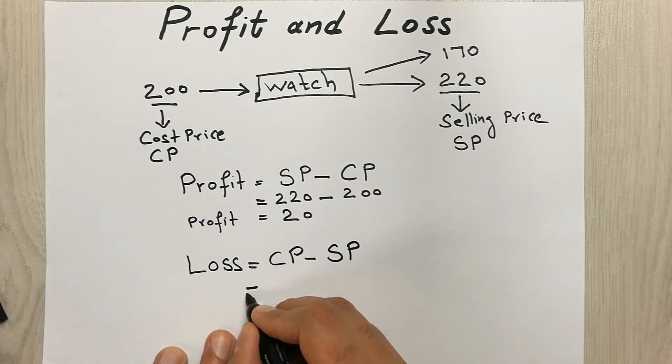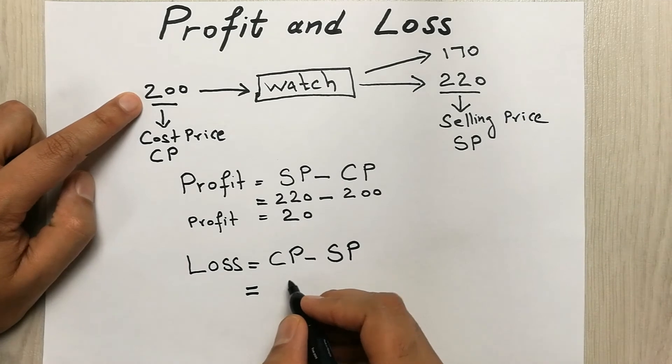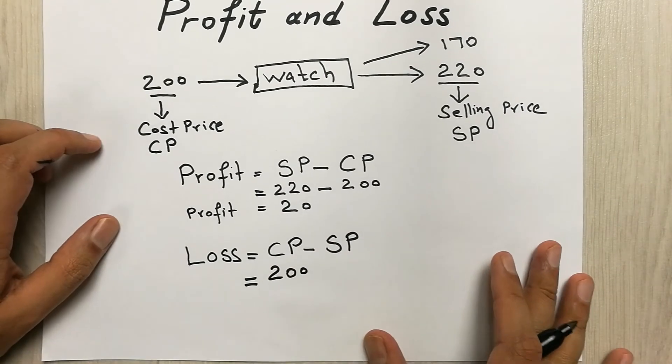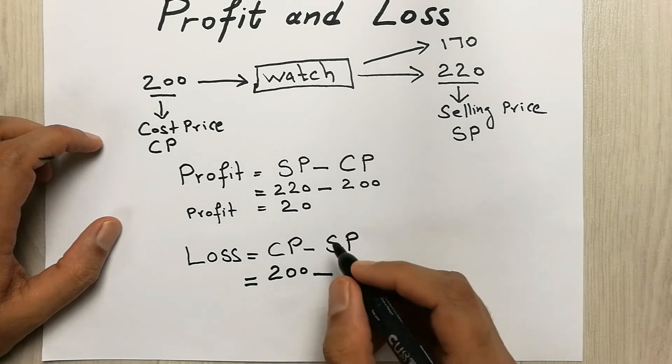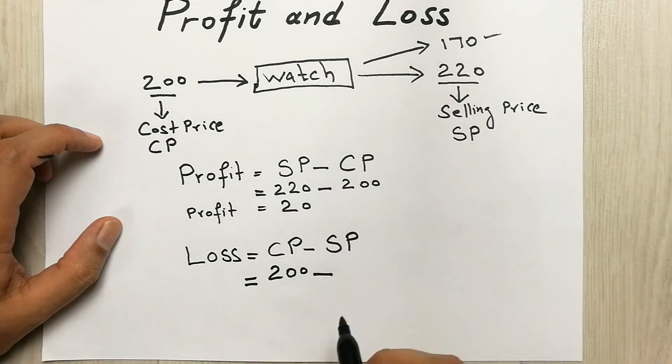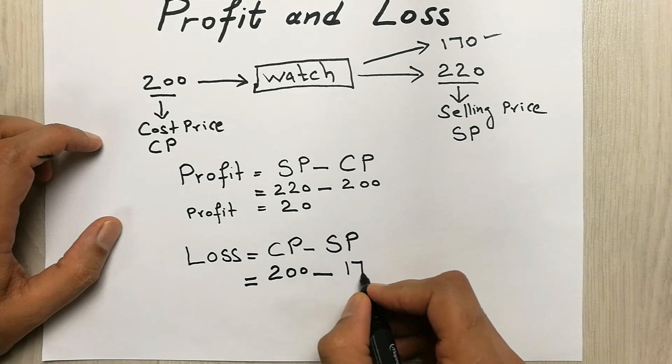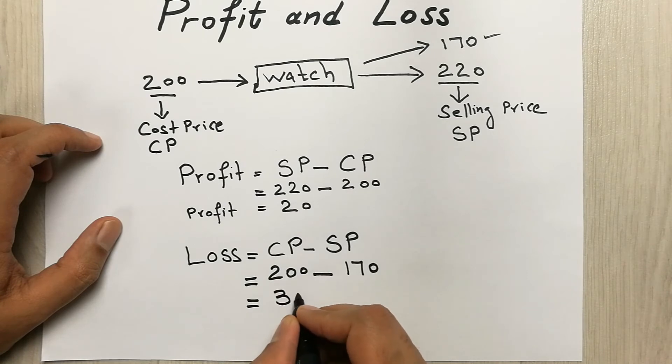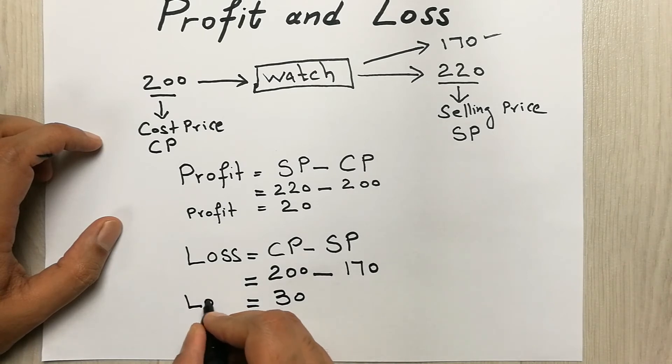So our cost price was 200, and our selling price this time was 170. So we will put here 170. So our answer will be 30. So our loss will be 30 rupees or dollars.